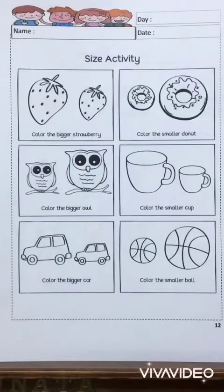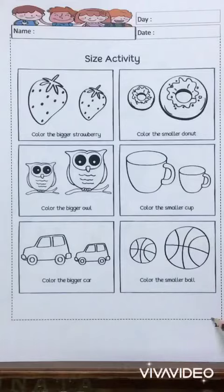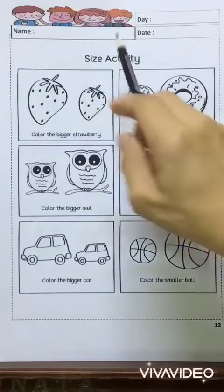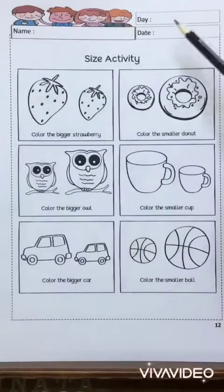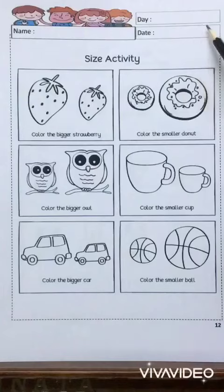Children, take out your Mathematics Revision book. Turn to page 12. Remember, circle page 12. Your name, day and date — remember to write.